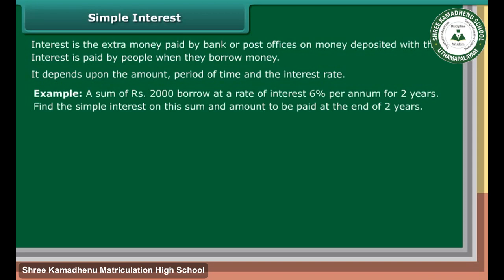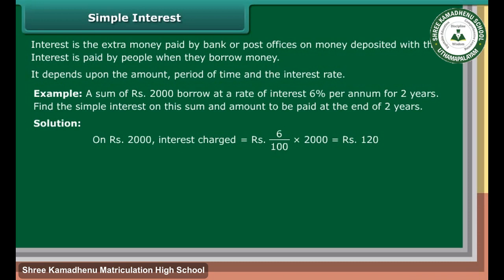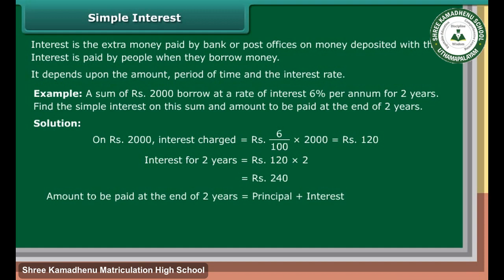Example: A sum of Rs. 2,000 borrowed at a rate of interest 6% per annum for 2 years. Find the simple interest on this sum and the amount to be paid at the end of 2 years. Solution: On Rs. 2,000, interest charged is equal to 6 upon 100 into Rs. 2,000, which is equal to Rs. 120. Interest for 2 years is equal to Rs. 120 into 2, which is equal to Rs. 240. Amount to be paid at the end of 2 years is equal to principal plus interest, which is equal to Rs. 2,000 plus 240, which is equal to Rs. 2,240.